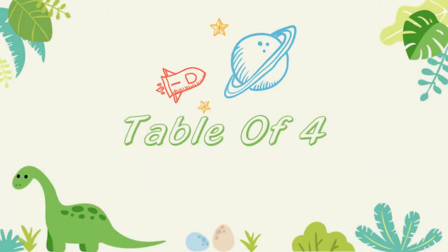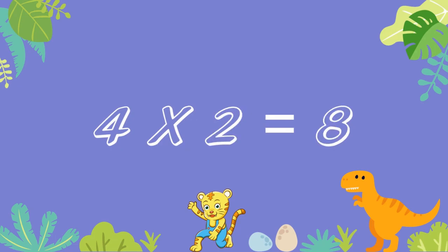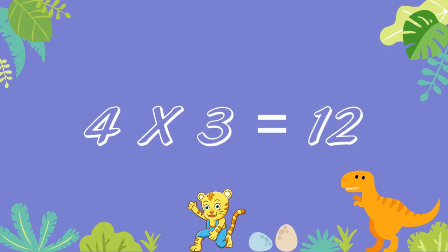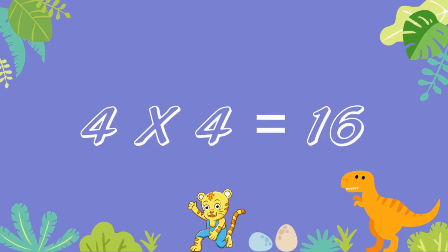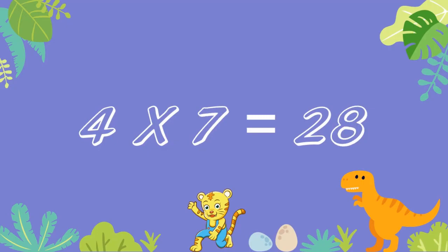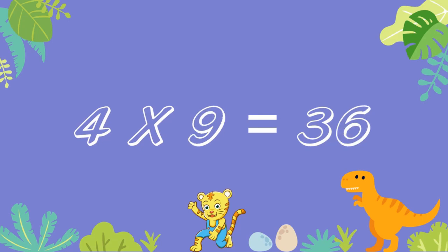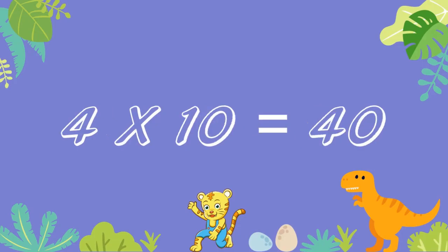Table of Four. 4 ones are four. 4 twos are eight. 4 threes are twelve. 4 fours are sixteen. 4 fives are twenty. 4 sixes are twenty-four. 4 sevens are twenty-eight. 4 eights are thirty-two. 4 nines are thirty-six. 4 tens are forty.